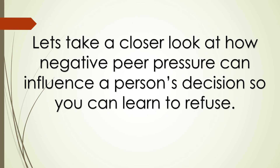Now we're going to take a closer look at how negative peer pressure can influence a person's decision so we can learn how to refuse it. Here's the first example. Jay asks, "Why are you running for student council?" Sophia says, "Because I want to make a difference at school." Hank says, "Only goobers run for student council." Jay says, "He's right — you don't want to waste your time on that." Sophia replies, "I think it will be fun." Hank says, "People will think you are a nerd." Jay says, "Yeah, you don't want everyone to think you're a nerd." Sophia says, "Fine, I won't run."